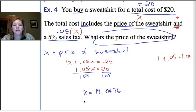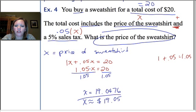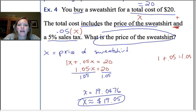So, let's think about what makes sense here. The price of the sweatshirt is approximately $19.05. Remember to answer the question. The original price of the sweatshirt was about $19.05. And then we added on the 5% sales tax.